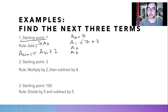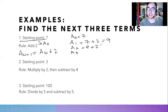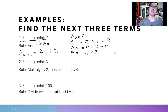Seven is the current term for a sub one, so seven plus two is equal to nine. Then for a sub two, the current term is nine, and we obey the same rule, so nine plus two equals 11. Then for a sub three, the current term is 11, and applying the same rule gives 13. So here are the next three terms for this sequence.